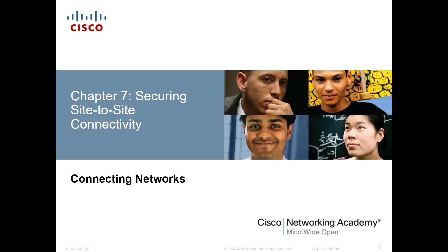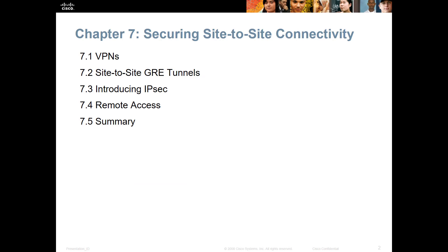Welcome to the CCNA Connecting Network series. This is the fourth in a series of four. We're doing chapter seven, securing site-to-site connectivity. This is the chapter where we focus heavily on VPN technology. We're going to talk about what a VPN is, GRE, then transition into IPsec, end with remote access, and a summary.